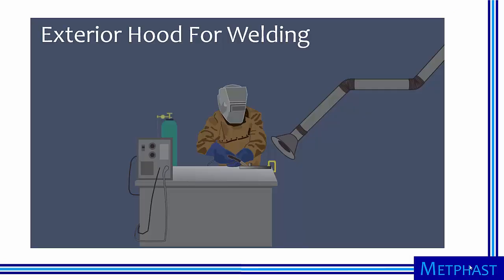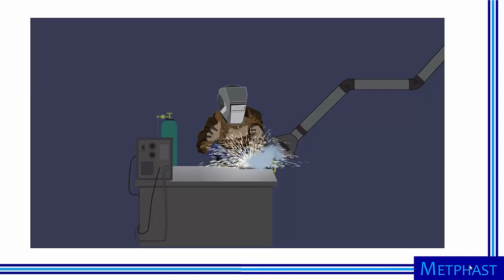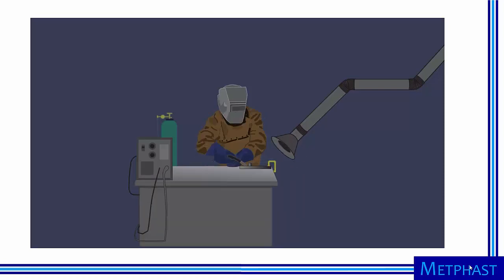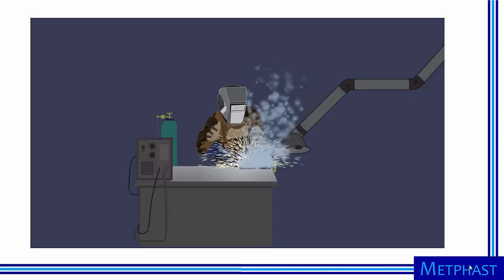This welder is using an exterior hood to capture fumes and gases emitted by welding. The hood must be placed in the proper position so that the air at the contaminant source entrains the fumes and gases, pulling them into the ventilation system. Capture is most effective when the hood is positioned close to and angled to face the source. If the hood is not angled toward the fumes source, capture will be poor regardless of proximity because air velocity is insufficient to entrain the contaminant.